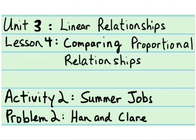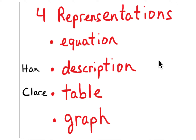This is problem number two from Activity 2, Summer Jobs. This problem is about Han and Claire and how much they make stuffing envelopes during the summer. Remember these four representations — in this case Han's situation will be given as a description, and Claire's situation will be given as a table.